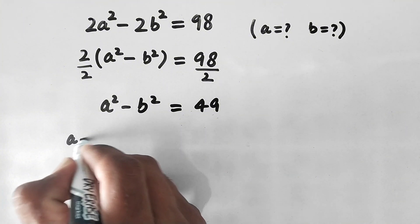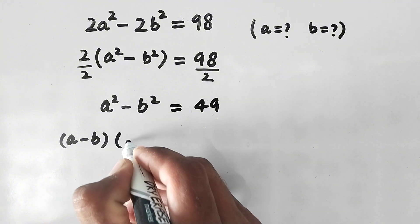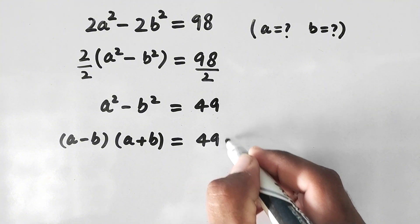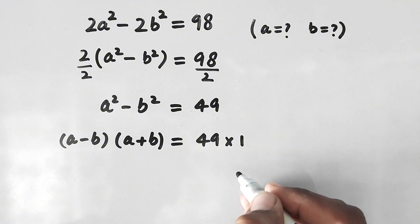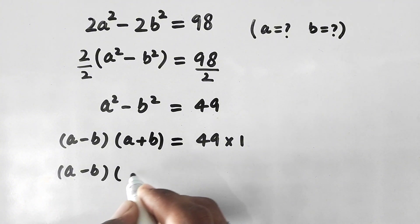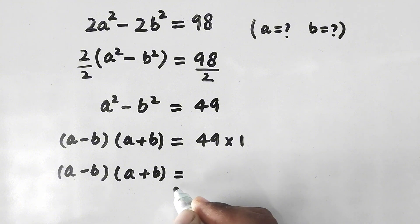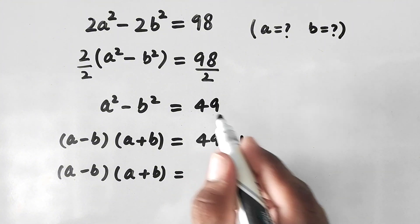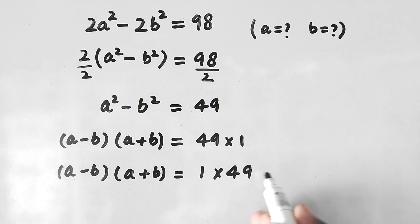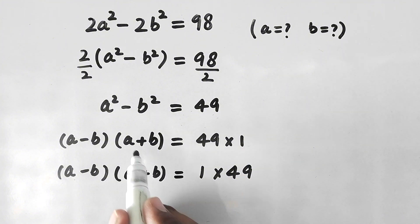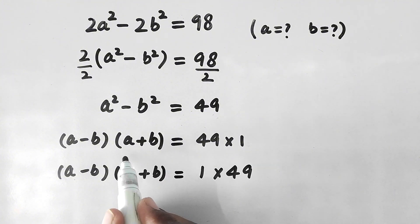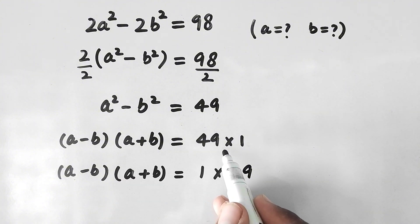Now, a² minus b² can be factored using the difference of squares identity: (a minus b)(a plus b) equals 49. We can also write 49 as 49 multiplied by 1, so (a minus b)(a plus b) equals 49 times 1. We have a product of two values on each side, so we can compare them.